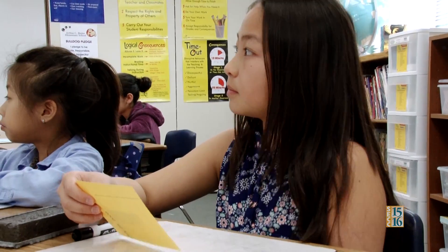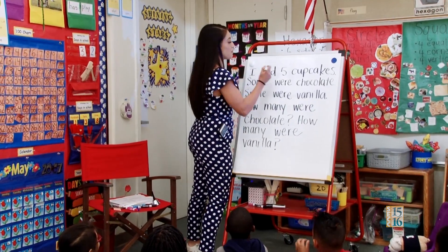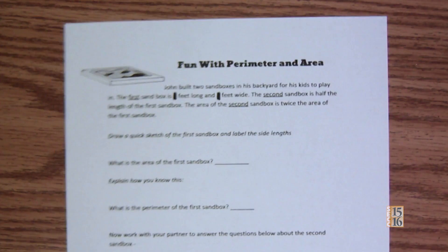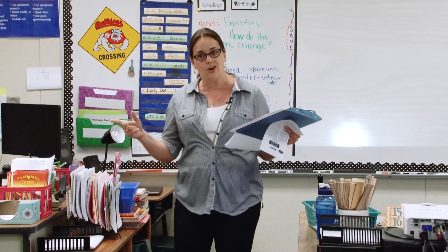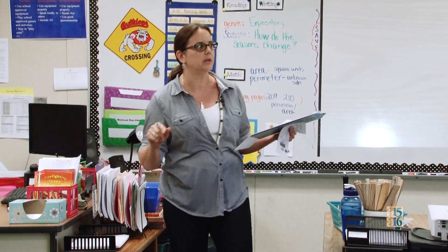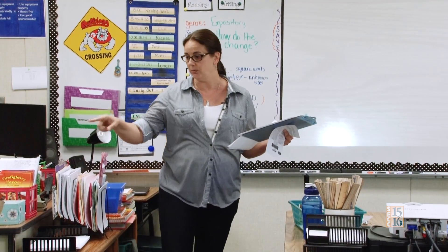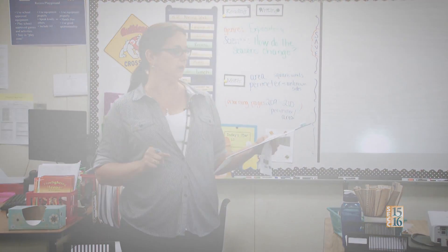We started with a problem about cupcakes, and I just tried to write it with them to get them engaged about what they were going to be thinking about. My lesson today was area and perimeter, and the learning goal was for them to find an unknown side. So you're going to find some areas and perimeters, but you're also going to solve some problems that might be a little challenging — like we do in our productive struggle math problem-solving notebook.